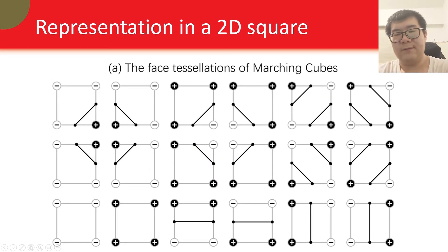Let me start with 2D examples. Here are the face tessellations of marching cubes. This is an exhaustive list, and there are a total of 18 cases, including two ambiguous cases as shown here. They have the same signs on the corner vertices, but we can't decide whether to connect the positive dots or the negative dots. Also, it's obvious that these templates are not able to represent sharp features.